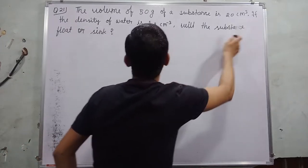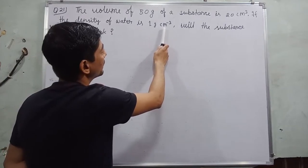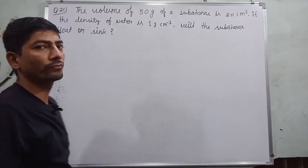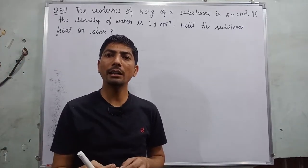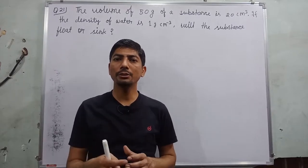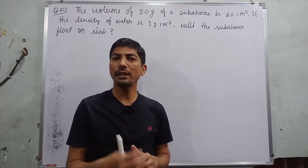Okay, so let's start. The volume of 50 grams of a substance is 20 centimeter cube. If the density of water is 1 gram per centimeter cube, will the substance float or sink? So in this question, we have mass, volume of substance, and density of water.